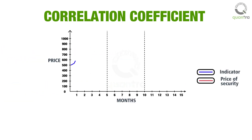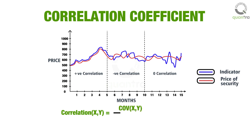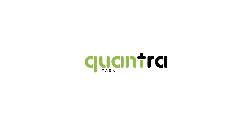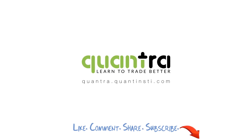While analyzing a security, correlation can also be used to identify a relationship between an indicator and a security. Correlation can be calculated by dividing the covariance between two securities by the product of the standard deviations of the two securities. Correlation can also be adjusted.